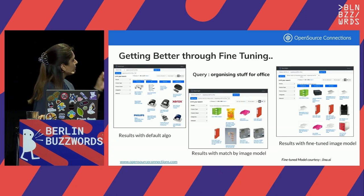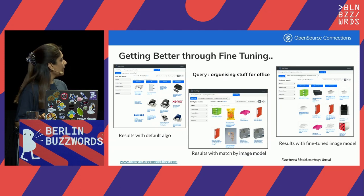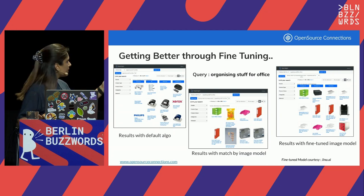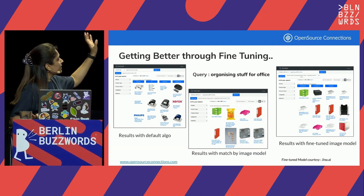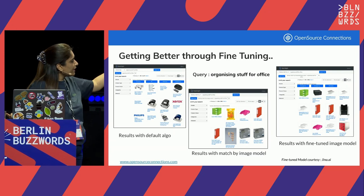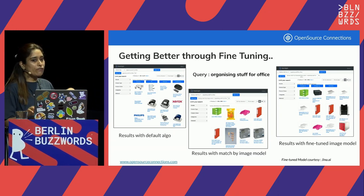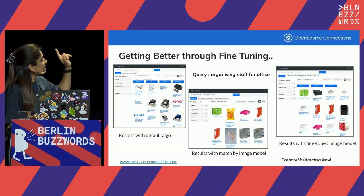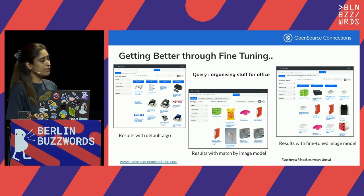As promised, I wanted to show you about the fine-tuning. I want to thank GINA AI for this — they helped, assisted, and guided us through the entire process of fine-tuning this model. As you can see, for the query 'organizing stuff for office,' which is a pretty clear query from the human language point of view, results with BM25-based retrieval were pretty vague. With the image model, we got some results that were really relevant. But when we used the fine-tuned model, all of the results seemed super relevant. I used thematic queries as one of my business cases for the model fine-tuning, and we got pretty impressive results.